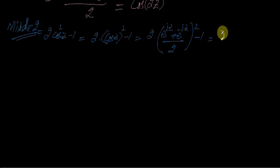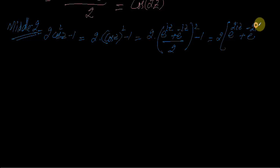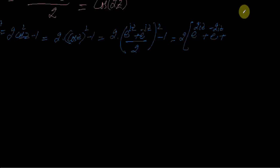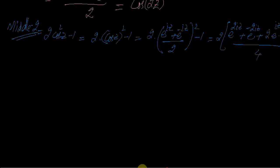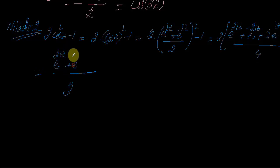Now we will simplify this. So 2 times — what is it — e^(2·iota·z), this simplification is now on top, e^(-2·iota·z) plus 2·e^(iota·z)·e^(-iota·z), that is a² + b² + 2ab, and divided by 4, and minus 1. We will simplify this — below it will be 2 — giving e^(2·iota·z) + e^(-2·iota·z) + 2.